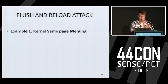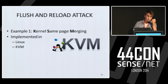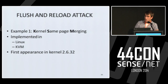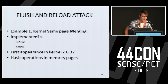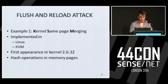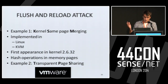This deduplication is implemented in Kernel Same-page Merging (KSM) in Linux and in KVM (a Linux-based VMM). It first appeared in kernel 2.6.32. KSM performs hash operations at the memory page level: it takes candidate pages, hashes them, and whenever two pages have the same hash output, it merges them so both processes use the same physical memory. VMware implements this as Transparent Page Sharing (TPS) — same procedure: hash operations at the page level, merging pages with the same hash output.